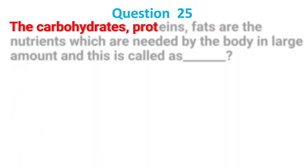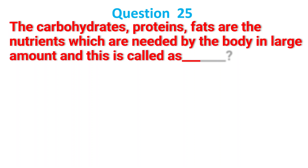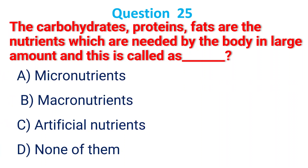Carbohydrate, protein, and fat are nutrients which are needed by the body in large amounts, and this is called: A. Micronutrient; B. Macronutrient; C. Artificial nutrient; D. None of them. The answer is B, macronutrient.